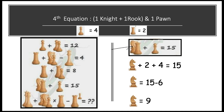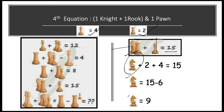In the fourth equation: knight + rook + pawn = 15. Substituting rook = 2 and pawn = 4: knight + 2 + 4 = 15, so knight = 15 − 6 = 9. Therefore, knight = 9.